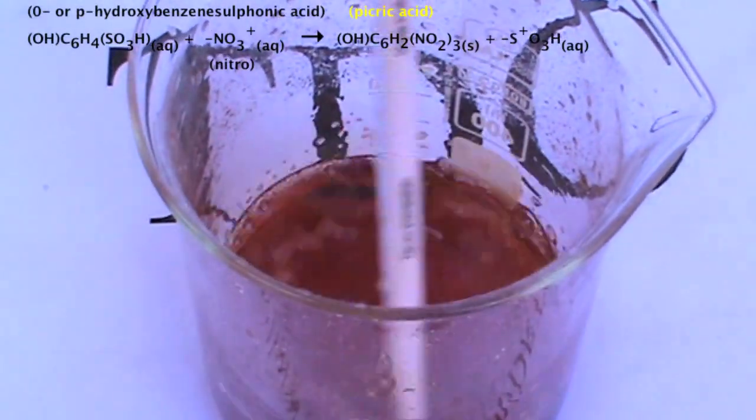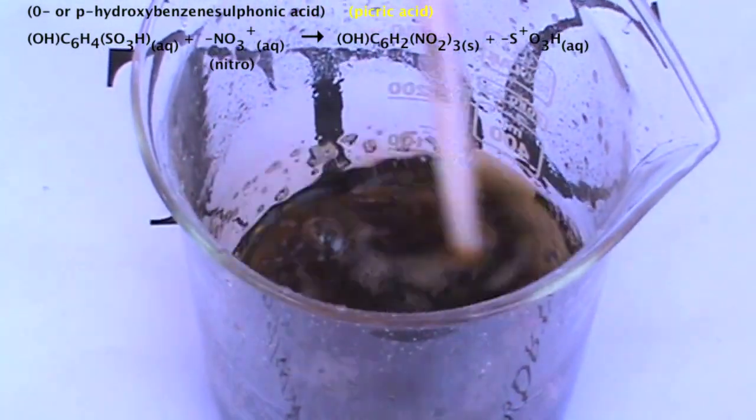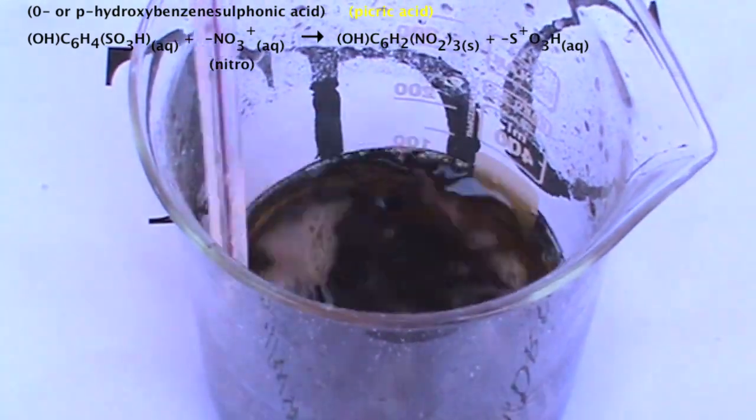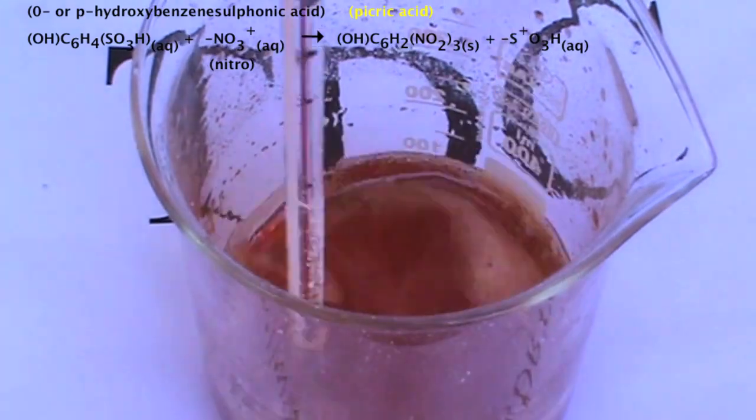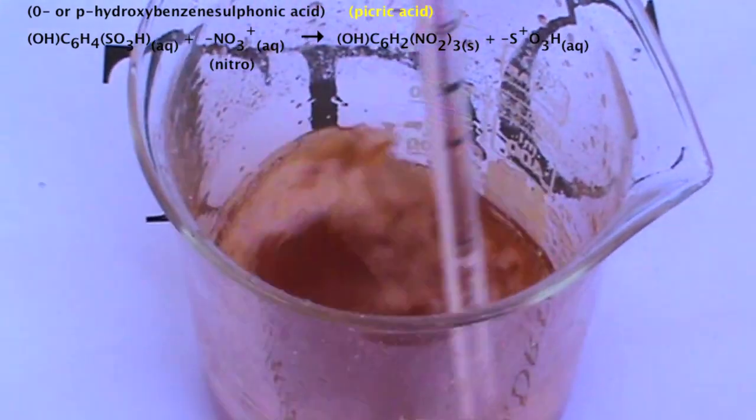In this step, the nitroelectrophile is produced by the addition of potassium nitrate to the sulfuric acid. The nitroelectrophile reacts with the ortho or parahydroxybenzene sulfonic acid to form picric acid.